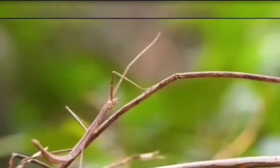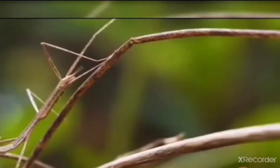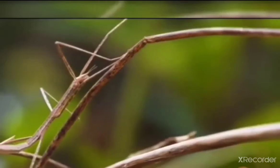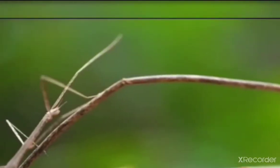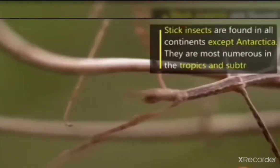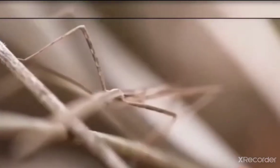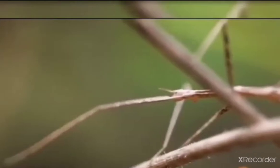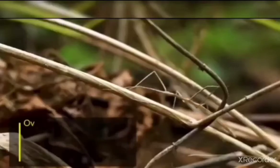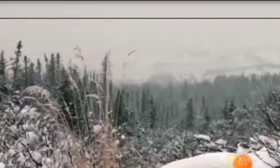Let's talk about the first creature — the stick insect. On your screen you can see this is not actually a stick, but a stick insect. It is also known as Phasmatodea. In this category there are stick bugs, walking sticks, and similar insects.